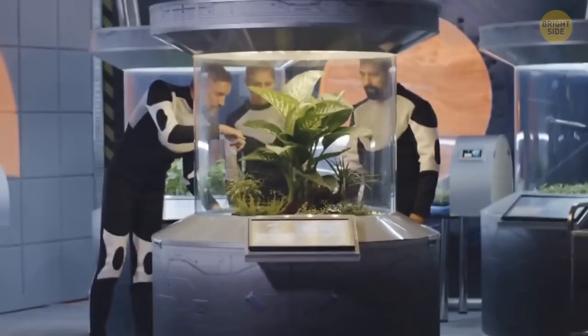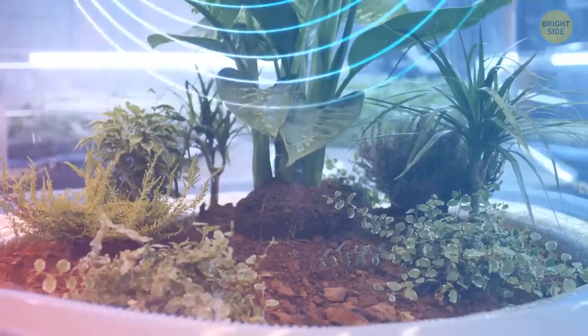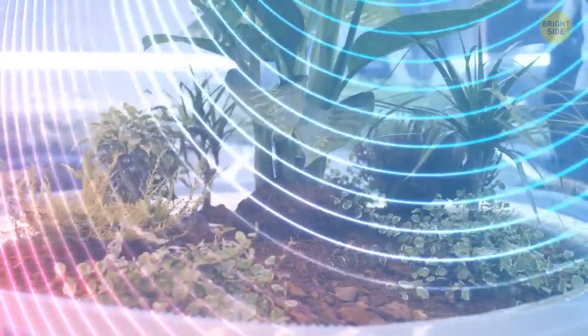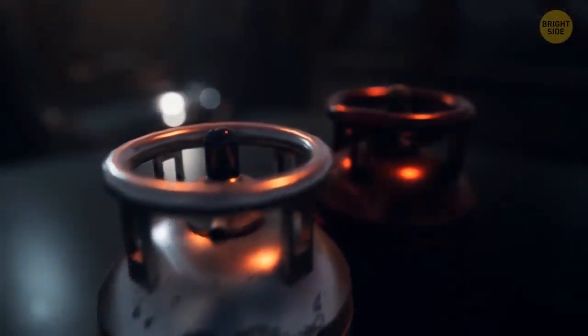Some space stations have plants and trees that produce oxygen through photosynthesis. Only instead of sunlight, they get energy from ultraviolet. Then, people fill large tanks with oxygen and carry them to their homes.